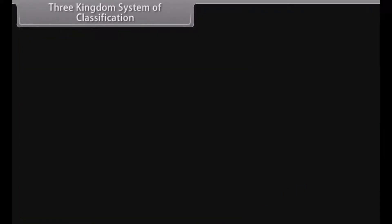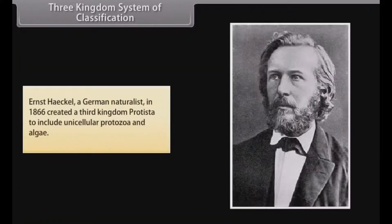Three kingdom system of classification: Ernst Haeckel, a German naturalist, in 1866 created a third kingdom, Protista, to include unicellular protozoa and algae.